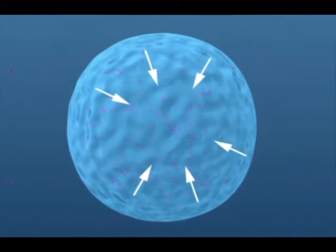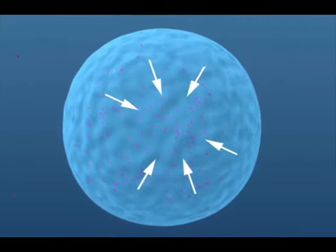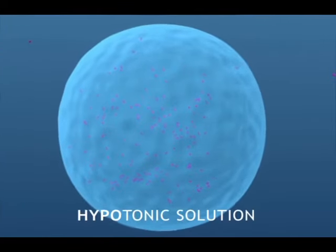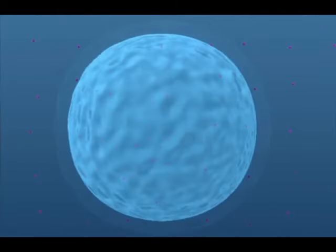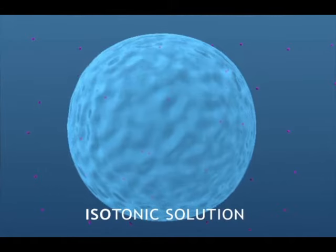Two, water moves in, thus the cell swells. This solution is hypotonic. The fluid outside the cell has a higher concentration of free water molecules than the fluid inside the cell, so water diffuses into the cell. Three, if no net water movement occurs, the solution is isotonic. The fluid outside and inside the cell have the same concentration of free water molecules, so water diffuses into and out of the cell at equal rates.